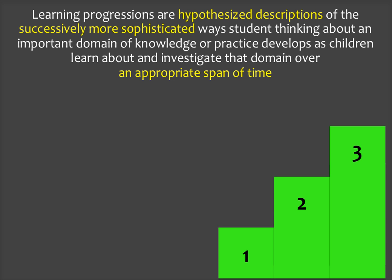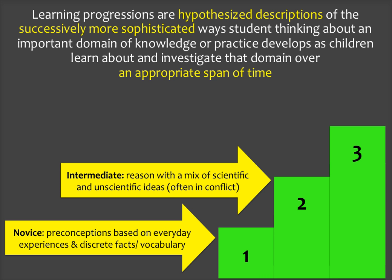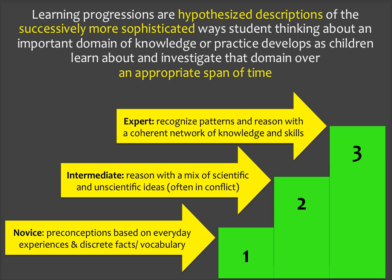Learning progressions are hypothesized descriptions of the successively more sophisticated ways student thinking about an important domain of knowledge or practice develops as children learn about and investigate that domain over an appropriate span of time. Learning progressions emphasize the building of knowledge through different stages. The lowest levels represent novice thinking — the preconceptions students have based on everyday experiences, and the discrete facts and vocabulary they currently know. As learners progress, they begin to reason with a mix of scientific and unscientific ideas, and use more specific facts and vocabulary. Finally, as they come to reason more like an expert, they recognize patterns and reason with a coherent network of knowledge and skills. It is important to recognize that learning progressions are hypotheses, and they are continuously being refined through research.